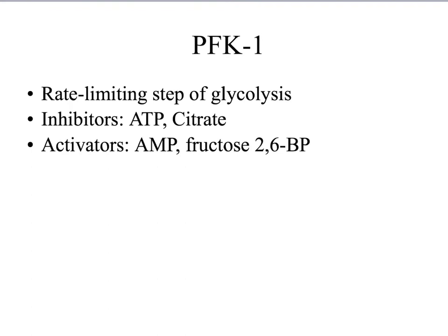Now we will talk about the third step of glycolysis, which is fructose 6-phosphate being converted to fructose 1,6-bisphosphate. This is done via phosphofructokinase 1 and is the rate-limiting step of glycolysis. There are inhibitors and activators of this enzyme — PFK1. Inhibitors include ATP and citrate, which are indicators that there is enough energy and the cell does not need to make more ATP. Activators would be AMP and fructose 2,6-bisphosphate, which indicate that ATP needs to be made and glycolysis should occur.